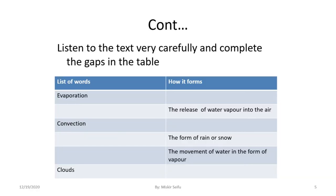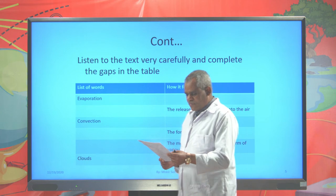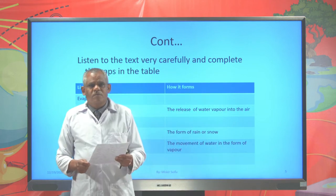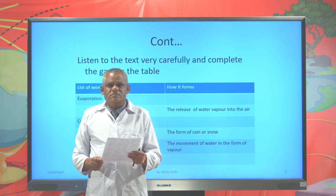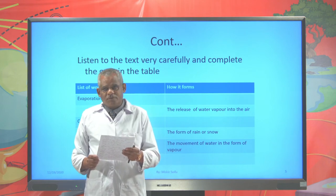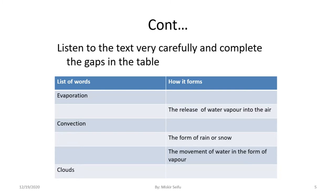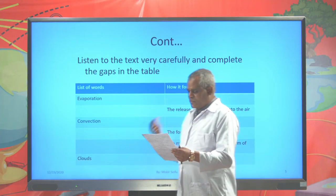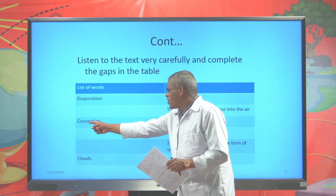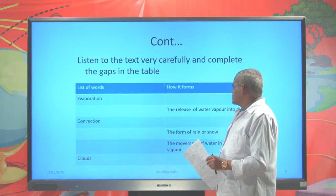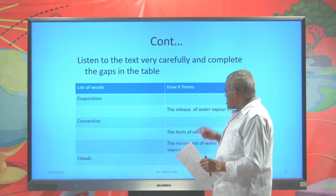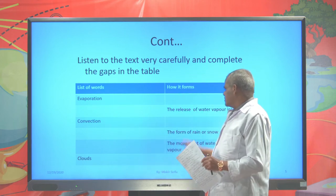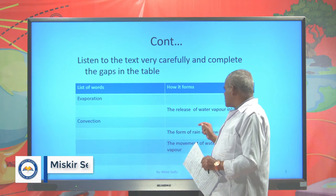Everyone has got transpiration. Convection — that is the word. Convection. Did you put your answer? That's good. Water vapor is taken up into the air. When water vapor is taken up into the air, it forms convection. The form of rain or snow — the appropriate vocabulary. That is precipitation.